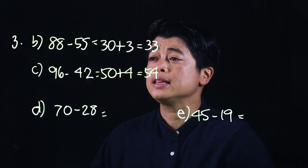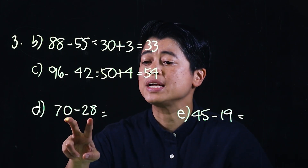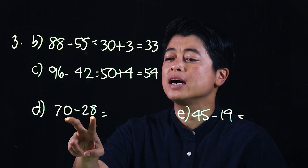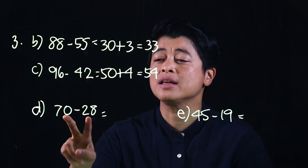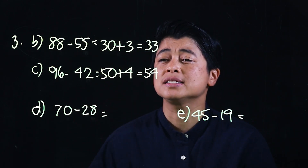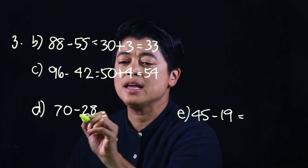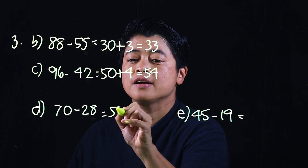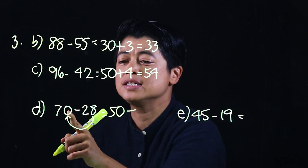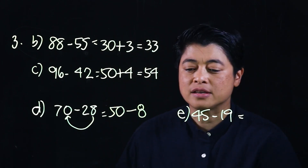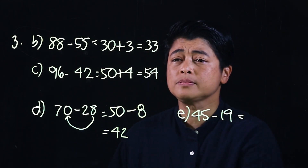In the next problem, we cannot subtract the ones directly, so we need to borrow. But since we can't borrow mentally, instead of adding we're going to subtract. So: 70 minus 20 is 50, then minus 8 minus 0, which is 8, giving us 42.